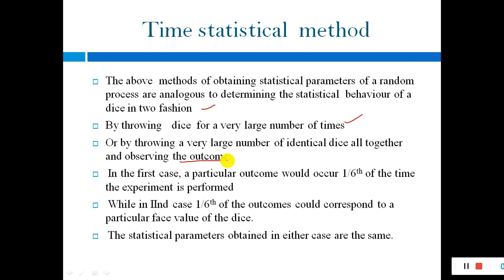In the first case — the time statistical method — a particular outcome would occur one-sixth of the time the experiment is performed. While in the second case — the ensemble method — one-sixth of the outcome corresponds to a particular face value, because we are throwing many dice simultaneously and observing what numbers we get. The statistical parameters in either case are the same.